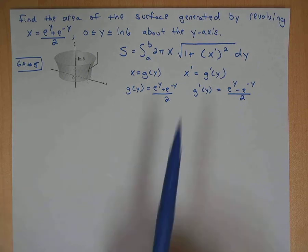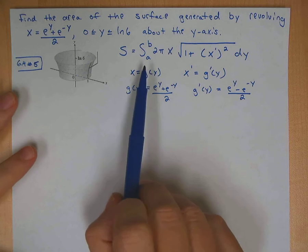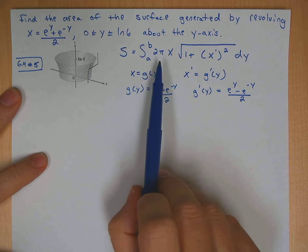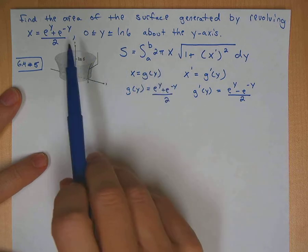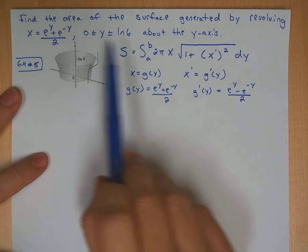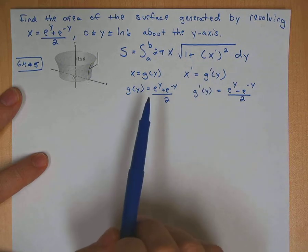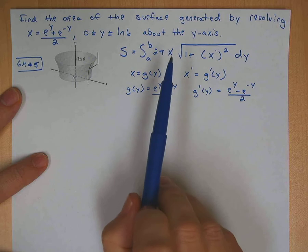So here is your surface area formula when you have an x equals function, which would be a g of y function. Here's your x, which is this function, and then x prime or g of y prime. I've got your g of y here, which is the same thing as x. It's going to go there.